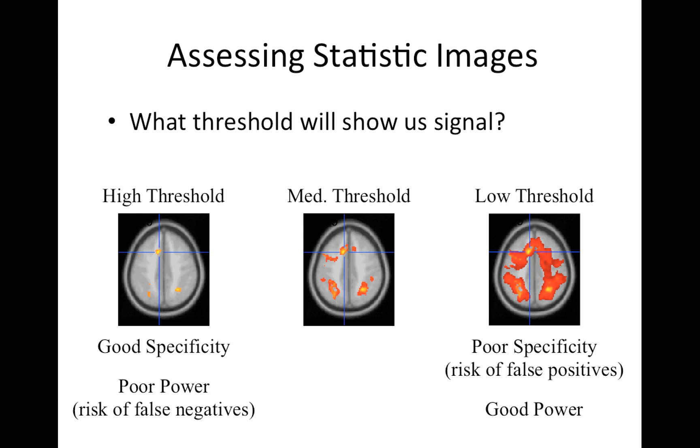So one question is, which threshold actually shows us signal? On the left here, we have a really high threshold, so we have just these few little regions of activation here. In this case, with a really high threshold, you have good specificity. It's pretty focused probably where the activation really was. And the side effect of that is you have poor power. There are a lot of voxels or regions of the brain that you're missing.